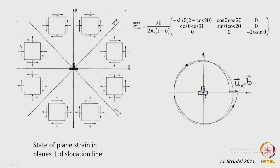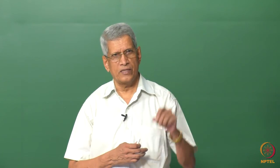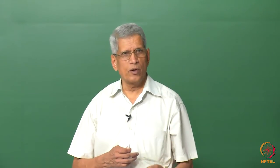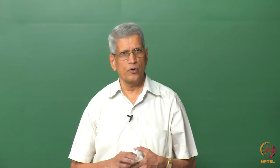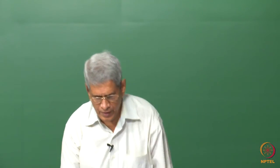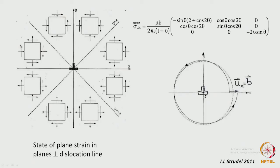This is a qualitative way to understand the stress components whose individual distributions were plotted separately in the previous slides. This is essentially a plane strain condition — along the z direction (along the dislocation), we look at the perpendicular plane and determine all stresses acting on it.